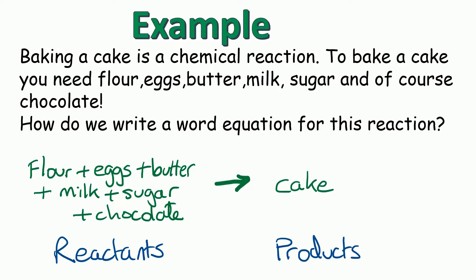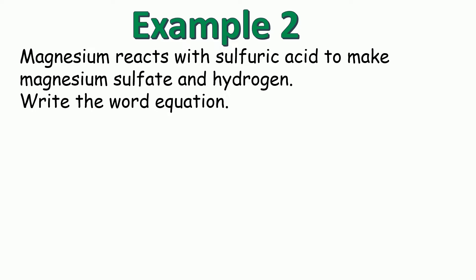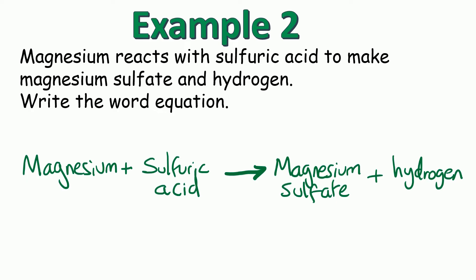Example two is one that you'd come across in a science lab. Magnesium reacts with sulfuric acid to make magnesium sulfate and hydrogen. Write the word equation. So once again we start with the arrow in the middle of our page, and the starting chemicals, the reactants, go on the left. So that would be magnesium and sulfuric acid. Anything that's made, the products, go on the right. So that would be in this case magnesium sulfate and hydrogen.